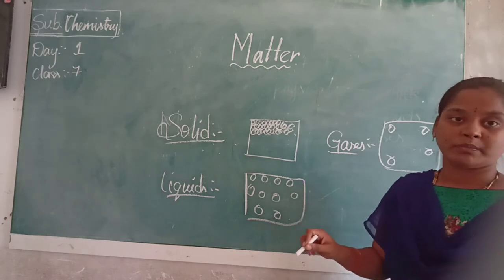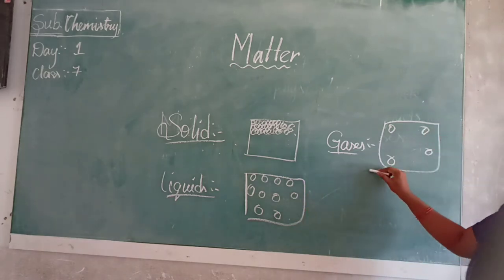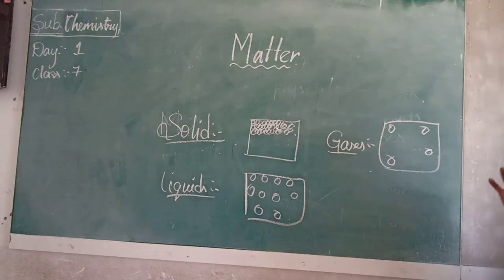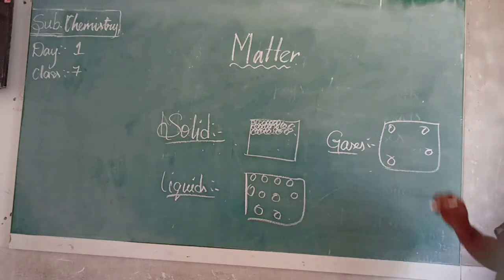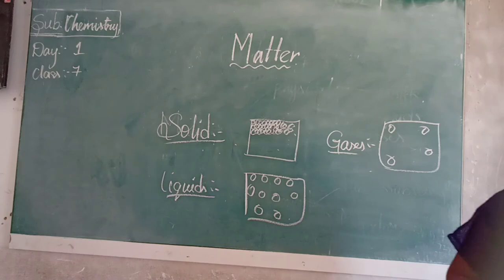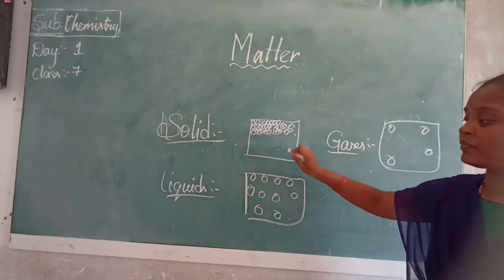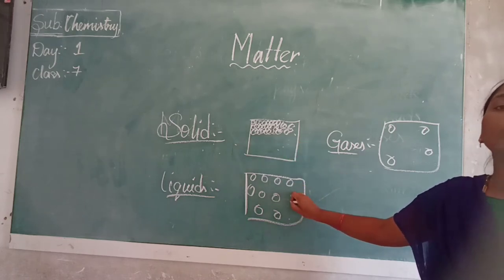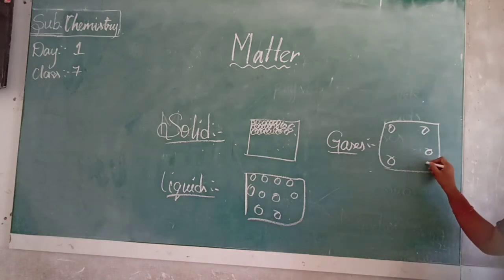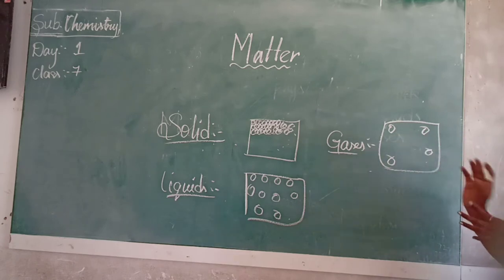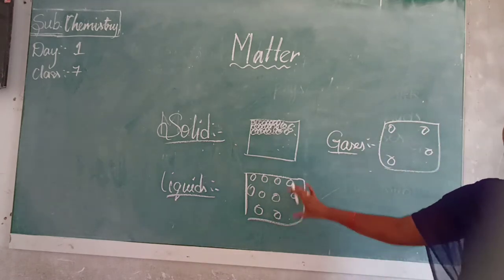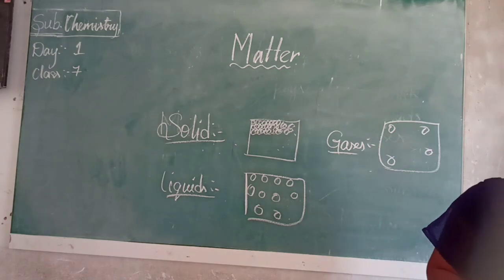Liquids do not have any shape but they have a definite volume. Even gases do not have any shape and they will be occupying some space - we cannot see them, whereas solids and liquids we can see. So solids will be having atoms which are very closely packed to each other. Liquids will be having atoms which are loosely packed. Whereas gases will be having atoms which are packed very very loosely - the force is less and more space is available in the gaseous state.